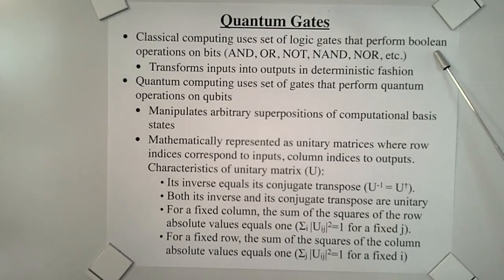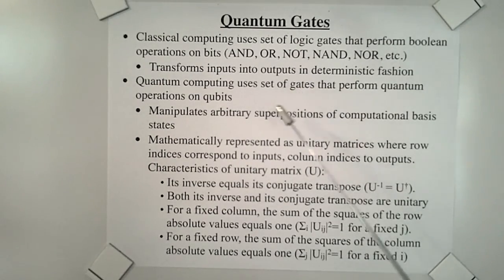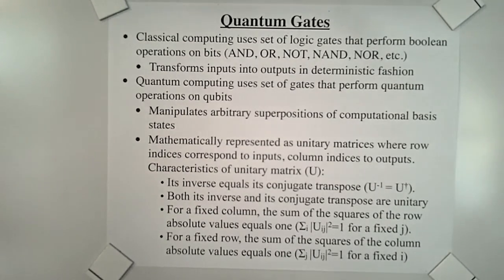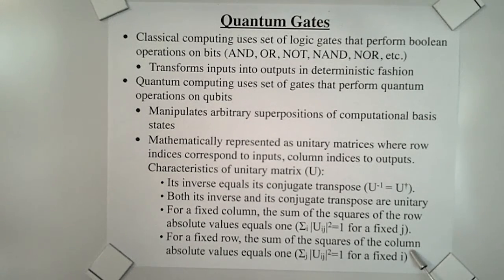Classical computing uses a set of logic gates that perform boolean operations on bits, such as AND, OR, NOT, and others. These gates transform inputs into outputs in a deterministic fashion. Quantum computing uses a set of gates that perform quantum operations on qubits. These gates manipulate arbitrary superpositions of computational basis states. Quantum gates are mathematically represented as unitary matrices, where row indices correspond to inputs and column indices correspond to outputs. The characteristics of a unitary matrix are: its inverse equals its conjugate transpose; both its inverse and conjugate transpose are unitary; for a fixed column, the sum of the squares of the row absolute values equals 1; and for a fixed row, the sum of the squares of the column absolute values equals 1.